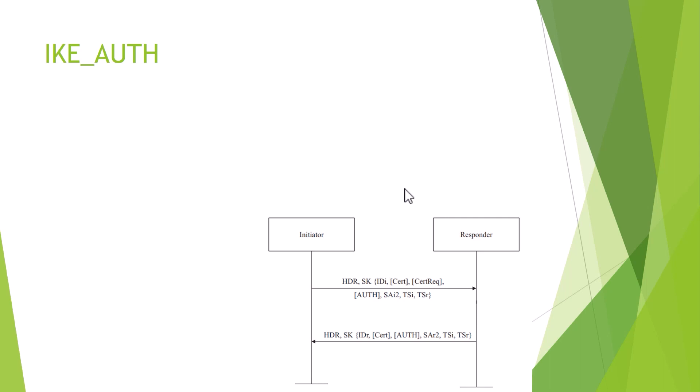Hello friends. Last video we talked about IKE version 2, the first part — IKE_SA_INIT. We discussed in detail what its purpose was. The purpose was that the next phase, the next step, IKE_AUTH, which we are going to cover today, needs some keying materials to be generated, so that this IKE_AUTH part is going to be strong, which we are going to authenticate.